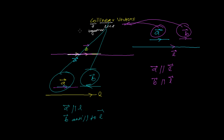So to be collinear vectors, only one thing we need to consider — no matter the magnitude. The two vectors should share the same straight line. If one vector is towards one direction and another is opposite, both are collinear. If one vector is in a line and another is parallel to the same line, you can say these are collinear vectors.